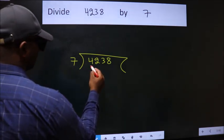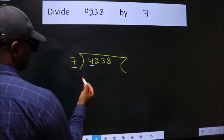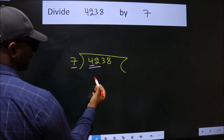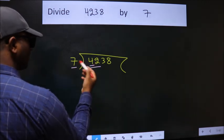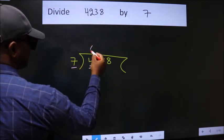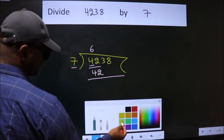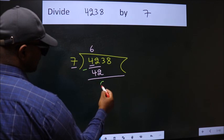Here we have 4. Here 7. 4 is smaller than 7, so we should take two numbers: 42. When do we get 42 in the 7 table? 7 times 6 is 42. Now we should subtract. We get 0.